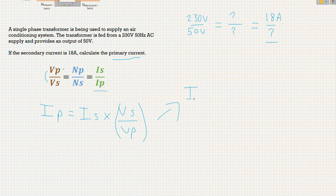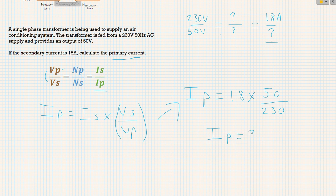Let's do it. So IP is going to be equal to, we know our secondary current of 18 amps, so it's going to be 18, multiplied by our voltage secondary, which is 50 volts, divided by our voltage primary, which is 230 volts. Perfect. So once we've punched that into our calculator, it's going to give us a value of 3.91 amps.